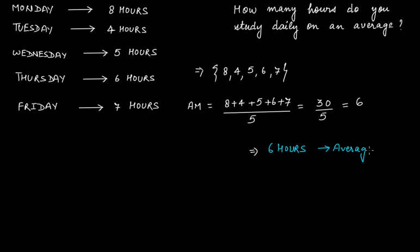Six hours gives the average studying hours. That means on an average, daily you study for six hours. Does that mean that every single day you study for six hours? No — because on Monday you studied eight hours, then four hours, then five hours, Thursday was six hours, and Friday was seven hours. Not every day is six hours, but if you calculate the arithmetic mean, the average will tell anyone that on an average you study for six hours daily.